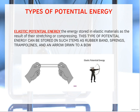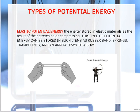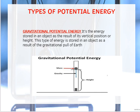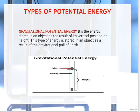Elastic potential energy is the type of energy stored in rubber bands, springs, trampolines, and an arrow drawn to a bow. The second type of potential energy is gravitational potential energy. It is the energy stored in an object as a result of its vertical position or height — specifically, stored as a result of the gravitational pull of the Earth.